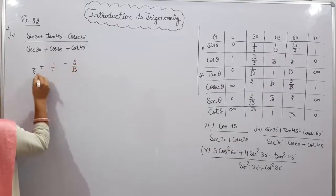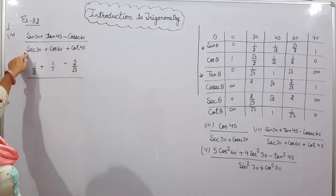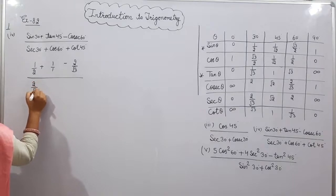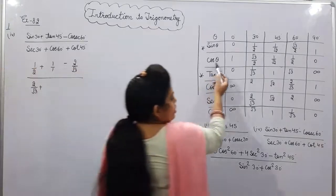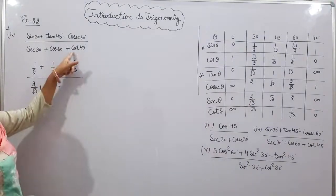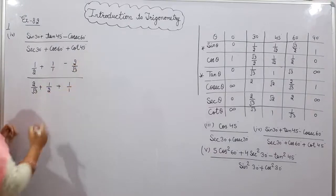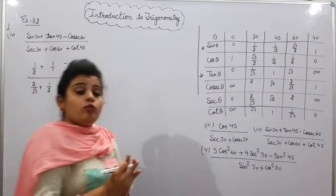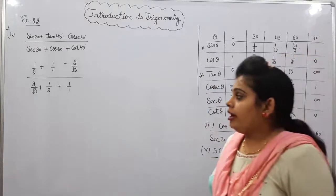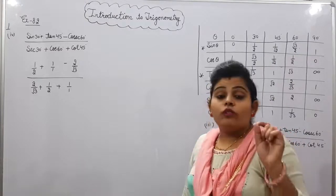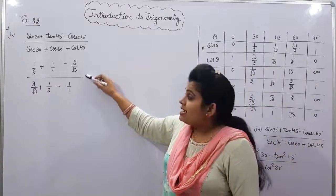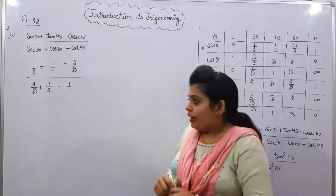We can write 1 as 1/1. Divided by sec 30, which is 2/√3, plus cosec 60 — cos 60 is 1/2 — plus cot 45 = 1. We have now put all the values of the trigonometric ratios. We will solve the numerator and denominator separately because they are in fraction form.